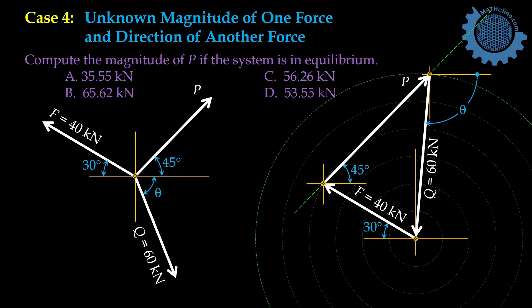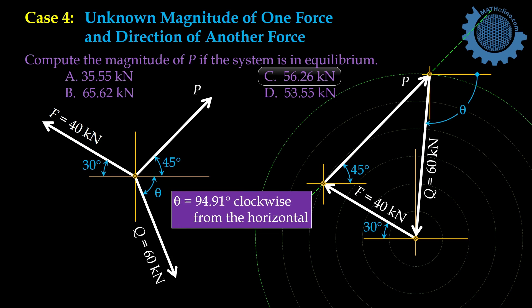Just pause this video and try to solve using the complex mode of your calculator. Here is the answer key: P is 56.26 kilonewton. And if you are not going to use the absolute value, you can also solve for the angle theta.